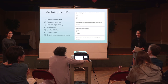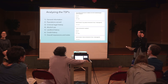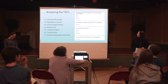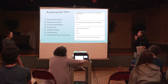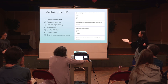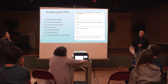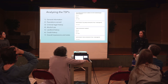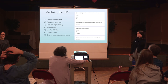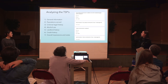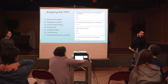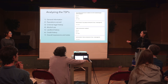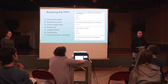This is an example of part of the Google Form we used to analyze the TSPs, so everyone can get an idea of how we were reporting information and trying to be consistent across team members. It had sections on general information, population served, criminal legal history, alcohol use, landlord credit history, and overall impressions and notes. The form combined multiple choice answers with short answers, so we could compare information easily across all TSPs but also note things that were confusing or unique.